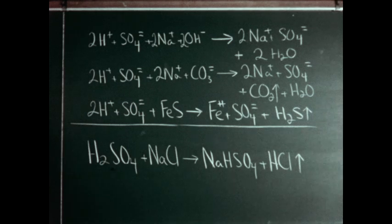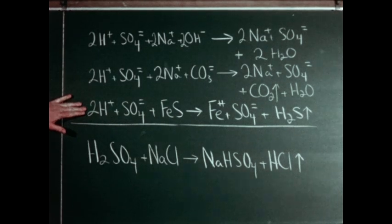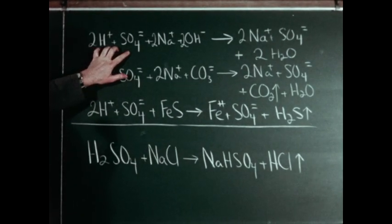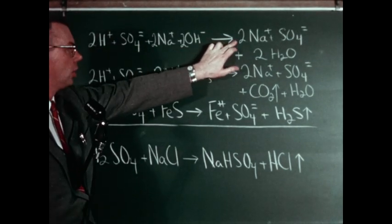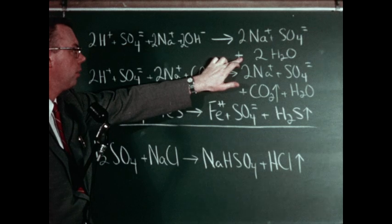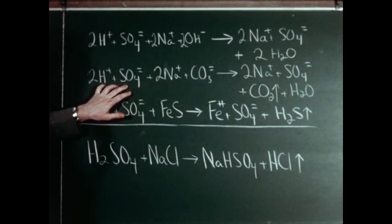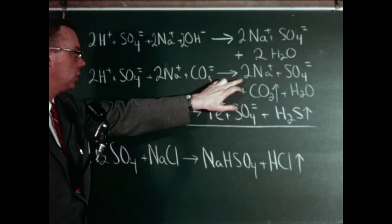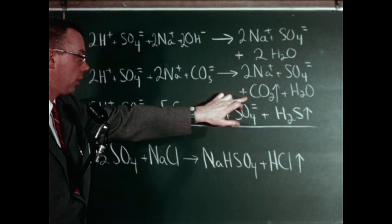The equations on the board illustrate three reactions of dilute sulfuric acid acting as an acid. In the first equation, the dilute sulfuric acid neutralized sodium hydroxide, producing sodium sulfate and water. In the second reaction, sulfuric acid reacting with sodium carbonate, producing sodium sulfate and liberating carbon dioxide and water.